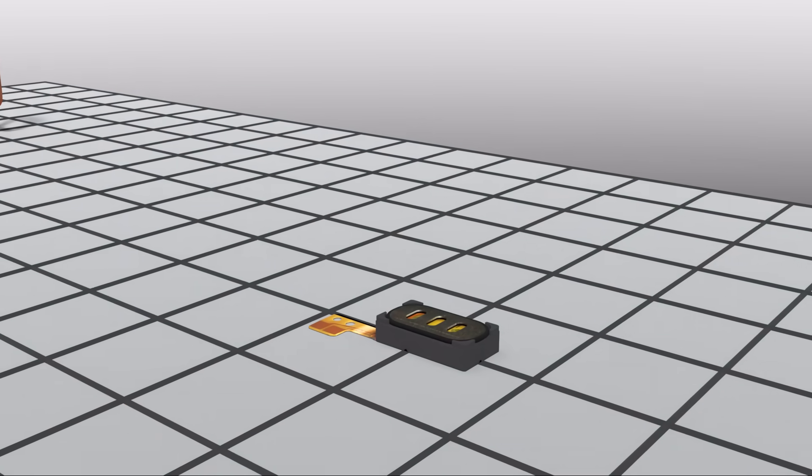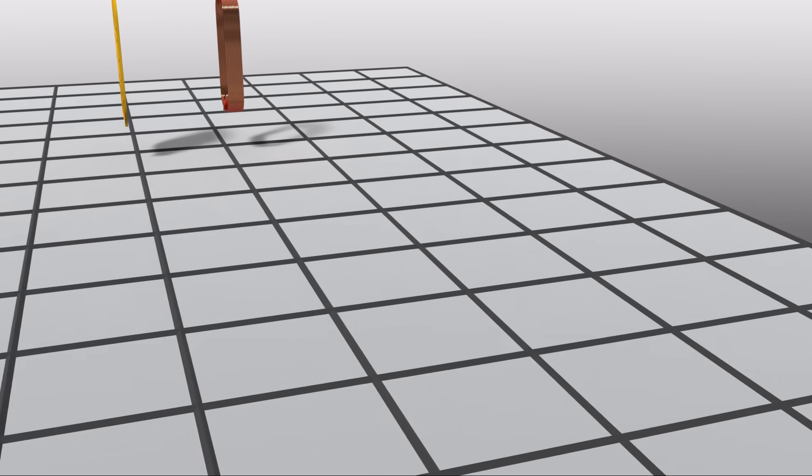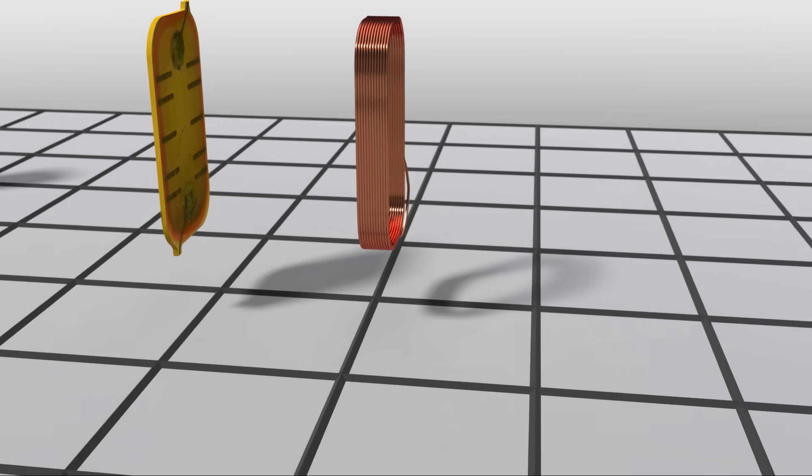The diaphragm creates these waves by moving back and forth, and what facilitates this movement is the second component, the voice coil.